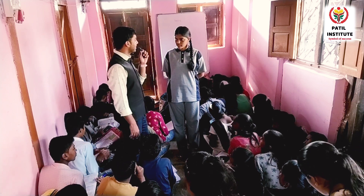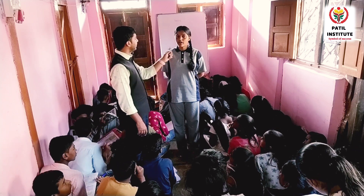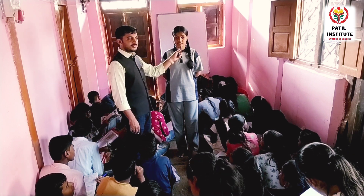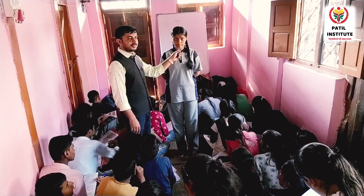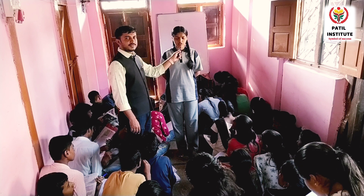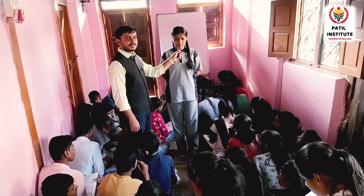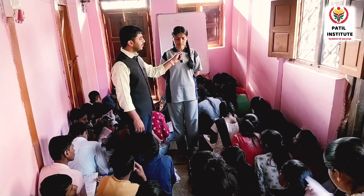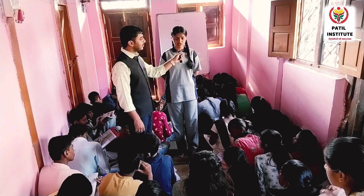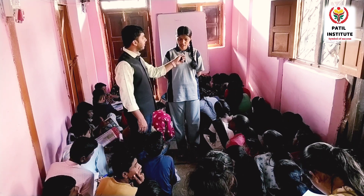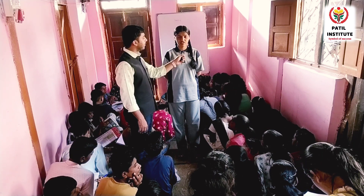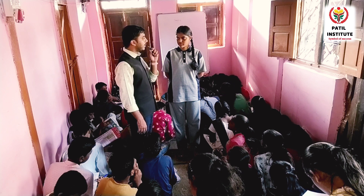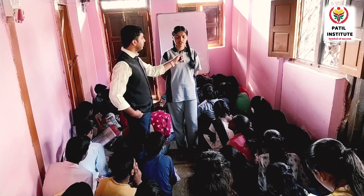Do you know the difference between mass and weight? Mass is a scalar quantity; weight is a vector quantity. The amount of matter present in an object is called its mass. The SI unit of mass is kg. Weight is measured in Newtons.